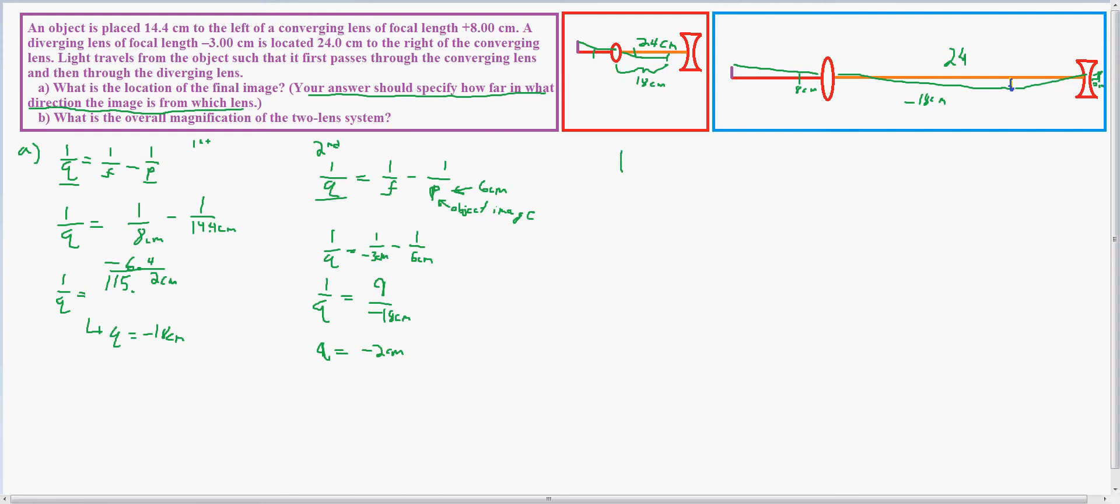So for B, what we have is the overall magnification of the system. Magnification is symbolized by M, which is equal to the image distance divided by the object distance. And in the lens, I'm going to calculate what I call M1 and then M2 for the magnification of the first lens times the magnification of the second lens. M1 times M2 equals M total.